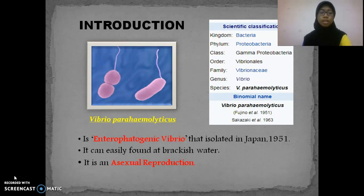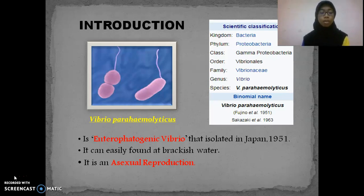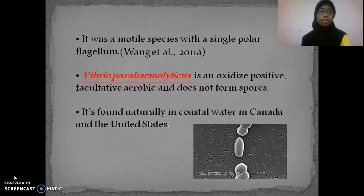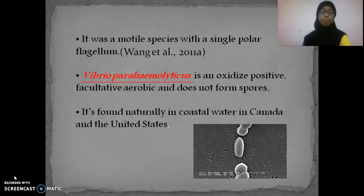This species is an enteropathogenic Vibrio that was isolated in Japan in 1951. Enteropathogenic means it can produce disease in the intestinal tract. This species can be easily found in brackish water, and cell reproduction occurs by asexual reproduction. It is a motile species with a single polar flagellum, is oxidase positive, facultative aerobic, and does not form spores like other bacteria. It can also be found naturally in coastal waters of Canada and the United States.